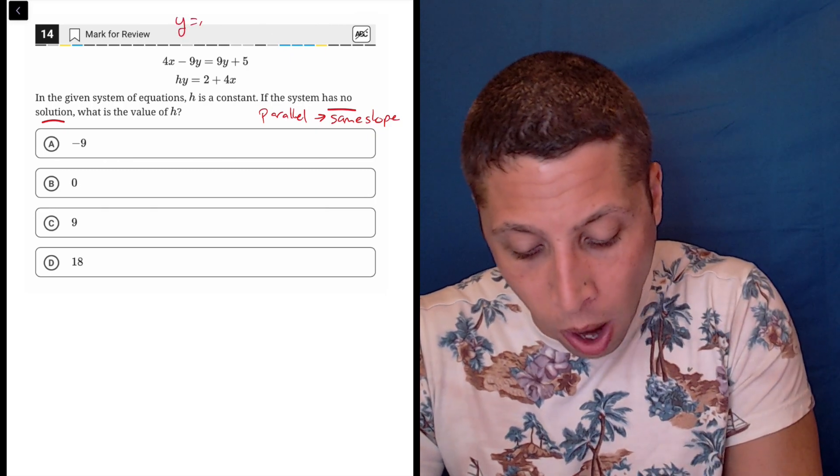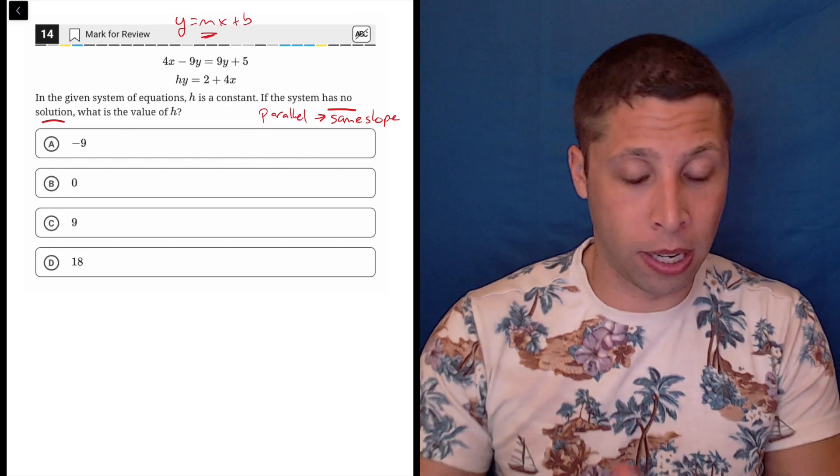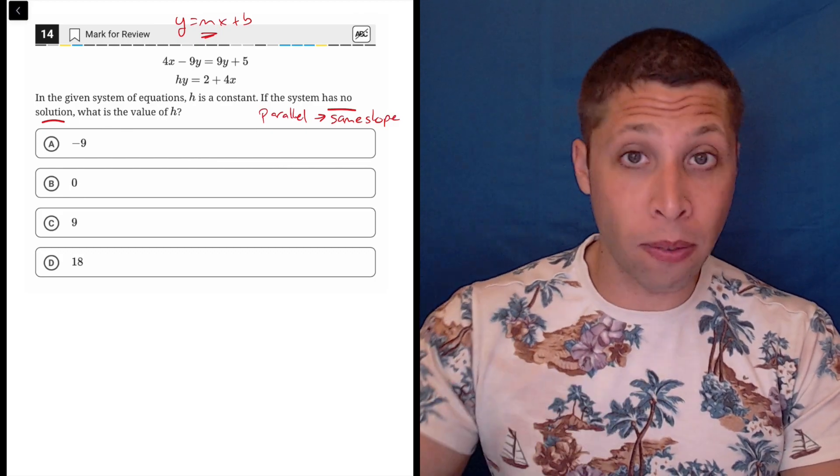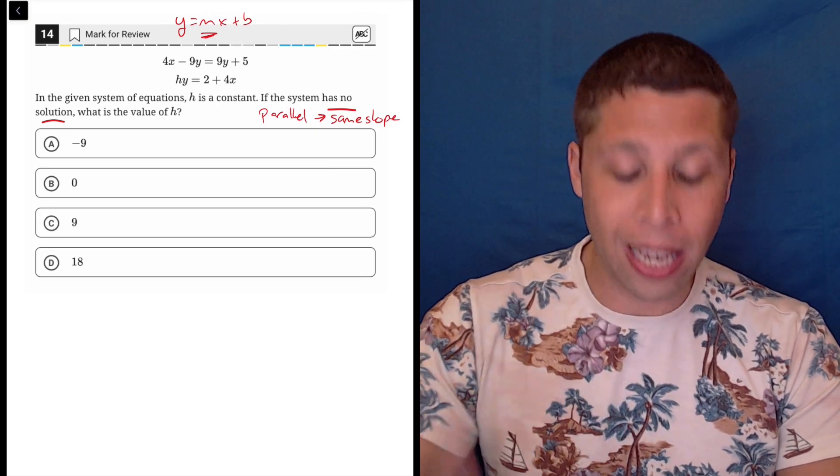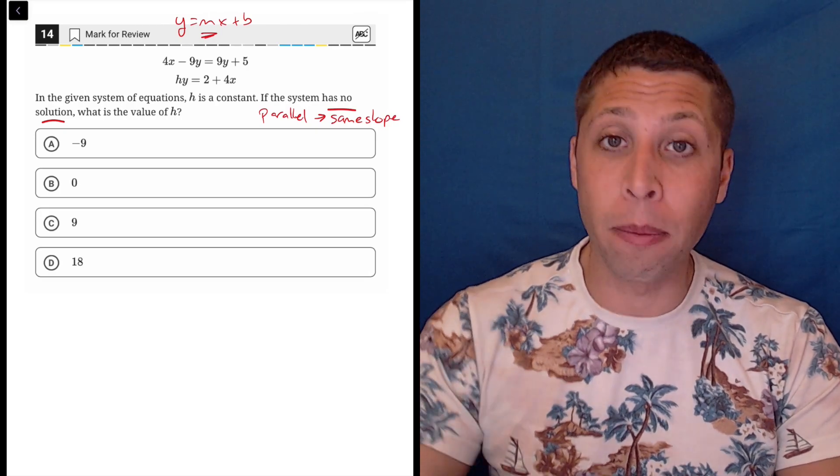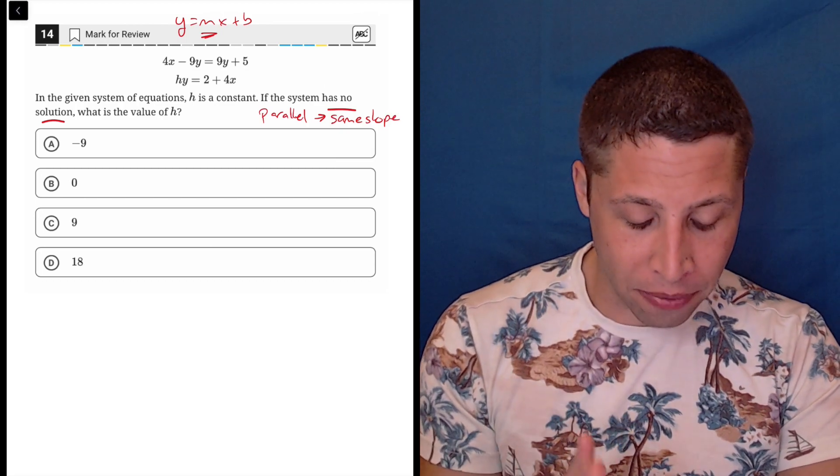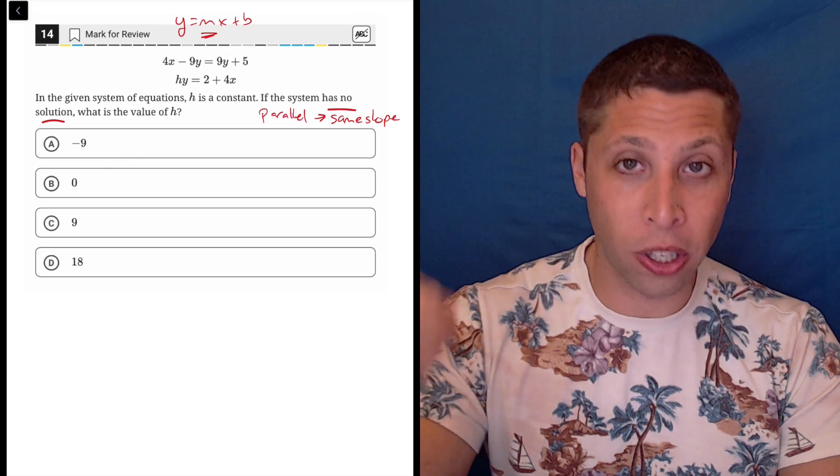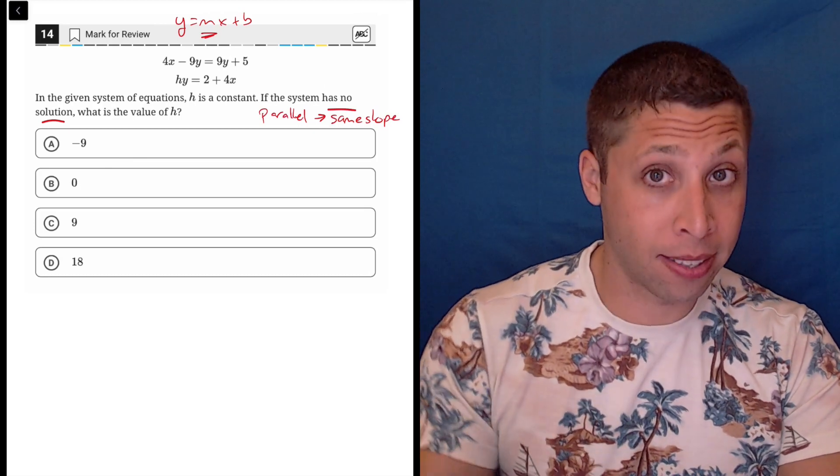So if we're thinking in terms of y equals mx plus b, it's that m portion that we're interested in. So what I could easily do is what I've always done in my videos: I could rearrange these equations so they're in y equals mx plus b form and then compare the slopes. And I will do that at the end, but I've had a bit of an epiphany, and maybe it's just because in this particular case, we have answer choices that let us test things out.